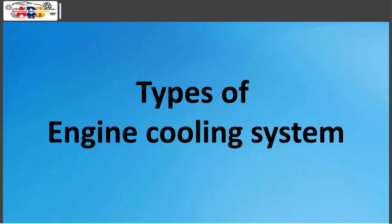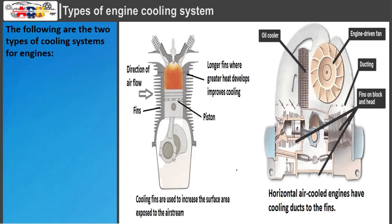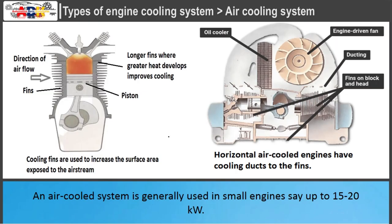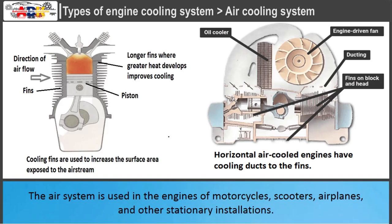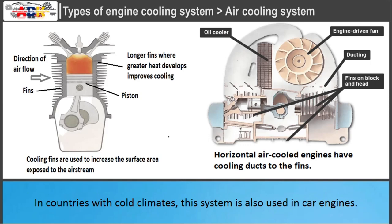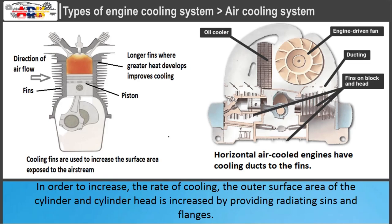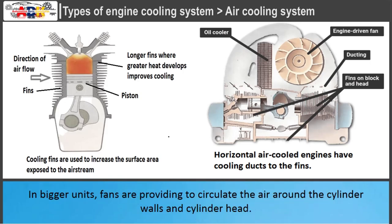Types of engine cooling system. The two types are: air cooling system and water cooling system. Air cooling system: An air-cooled system is generally used in small engines up to 15 to 20 kilowatts. It is used in engines of motorcycles, scooters, airplanes, and other stationary installations. In countries with cold climates, this system is also used in car engines. The heat is dissipated directly to the atmospheric air by conduction through the cylinder walls. To increase the rate of cooling, the outer surface of the cylinder and cylinder head is increased by providing radiating fins and flanges. In bigger units, fans are provided to circulate air around the cylinder walls and cylinder head.